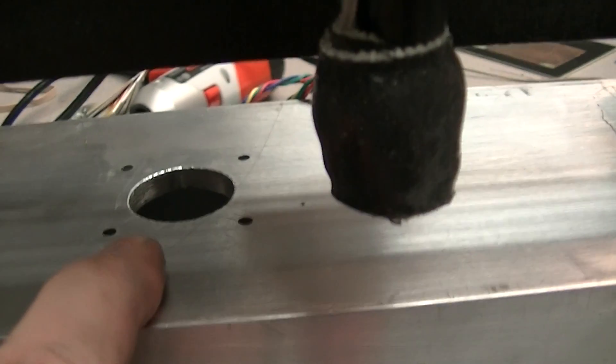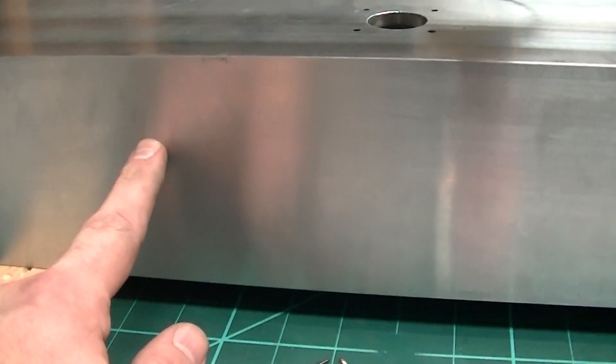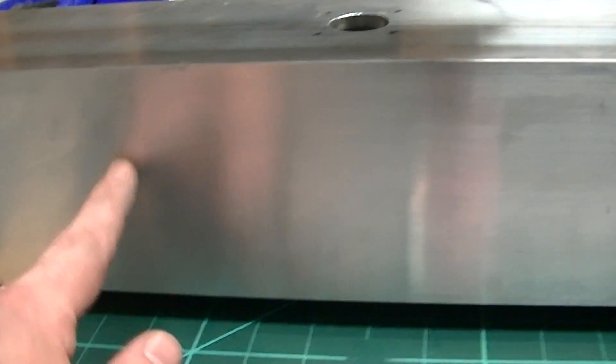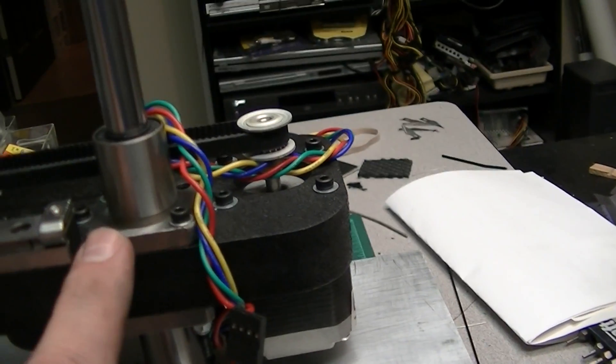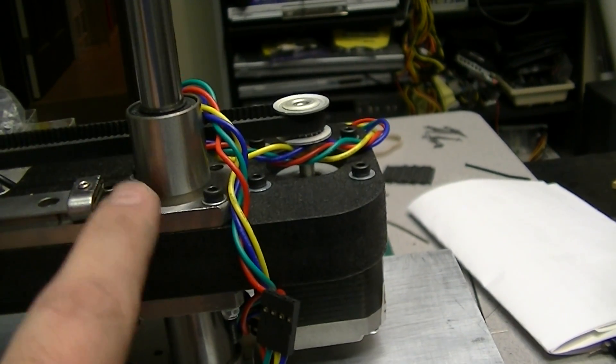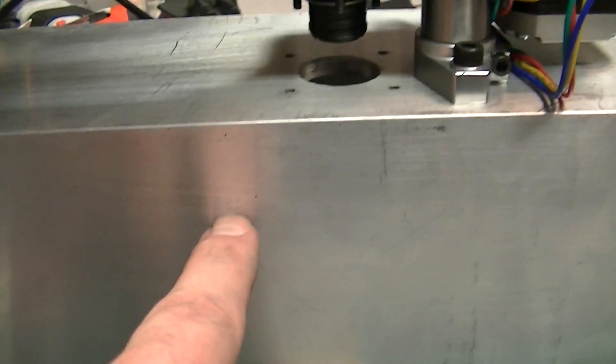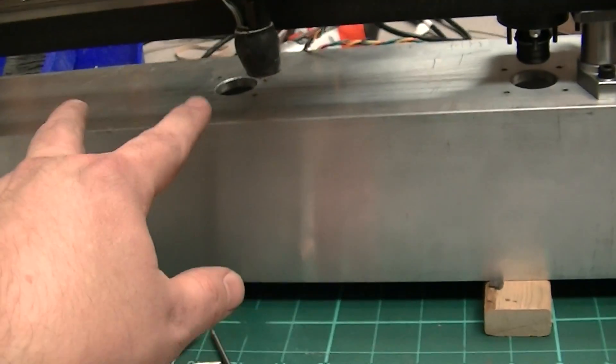Here will be the Y stepper motor and I'm gonna have some bearings similar to this, probably 10 millimeter. I've got eight and ten to play with. This type of bearing bolted through holes that I have yet to make here on the inside. There'll be two of them so two rods can move back and forth and hold the bed up.